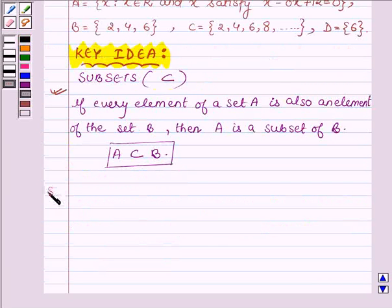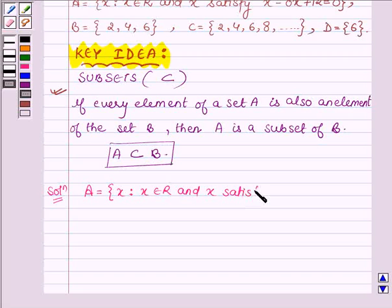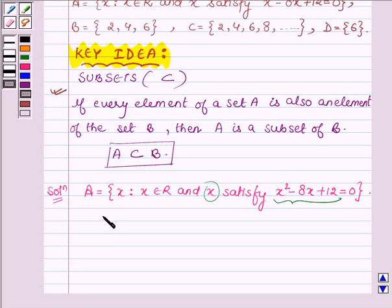Let us now start with the solution. The set A contains all x such that x belongs to R and x satisfies x² - 8x + 12 = 0. So we have to find the x which satisfies this equation.